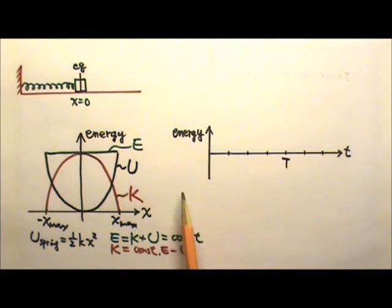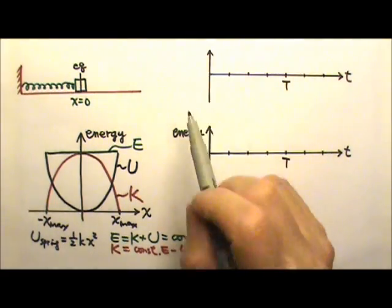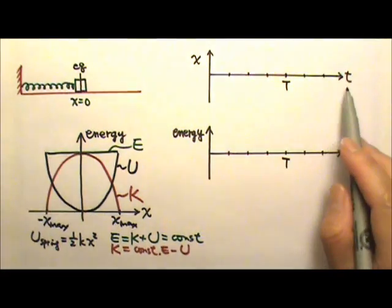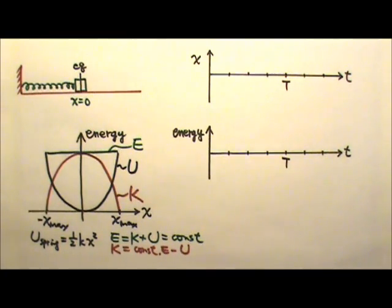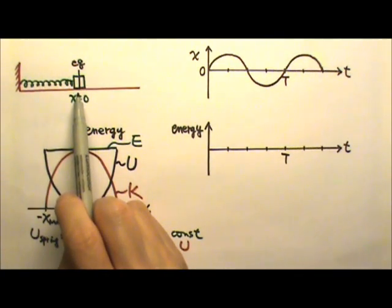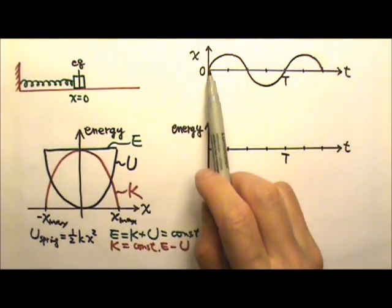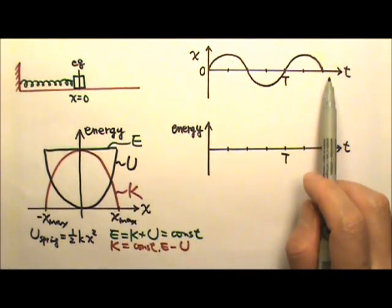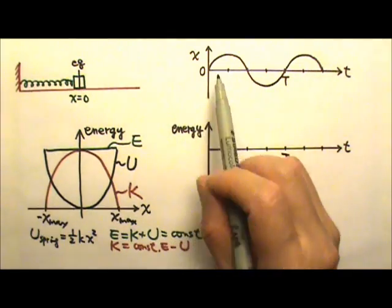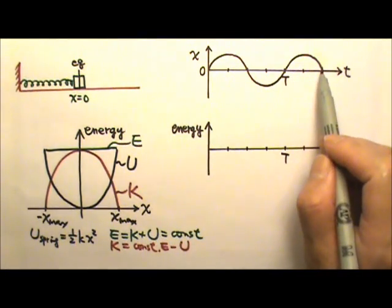What if we want to plot an energy versus time graph? It may help if we plot a position versus time graph first. Suppose we start at t equals zero at equilibrium, and the position is a sine function.